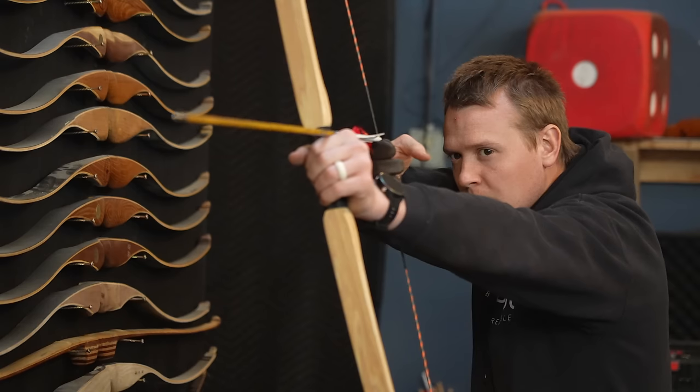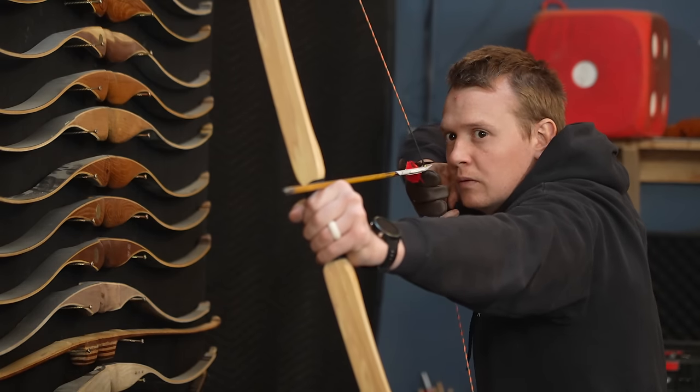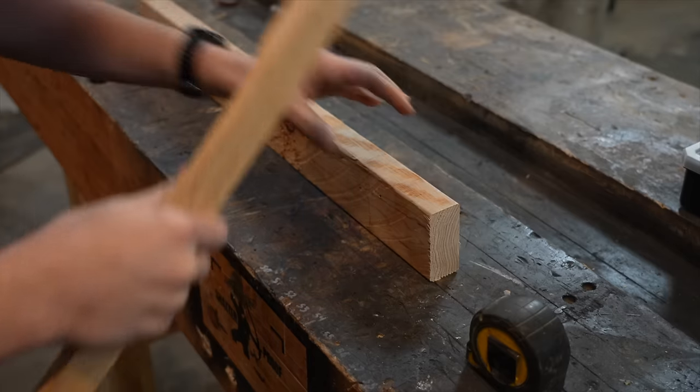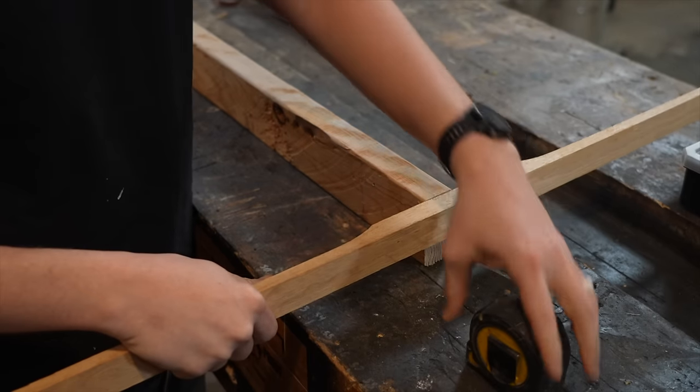But before we tiller the bow and shoot the bow, let's build a quick tillering tree. Find a board that's around three feet long. It's time to measure, but measure from the top of the bow, not the board.